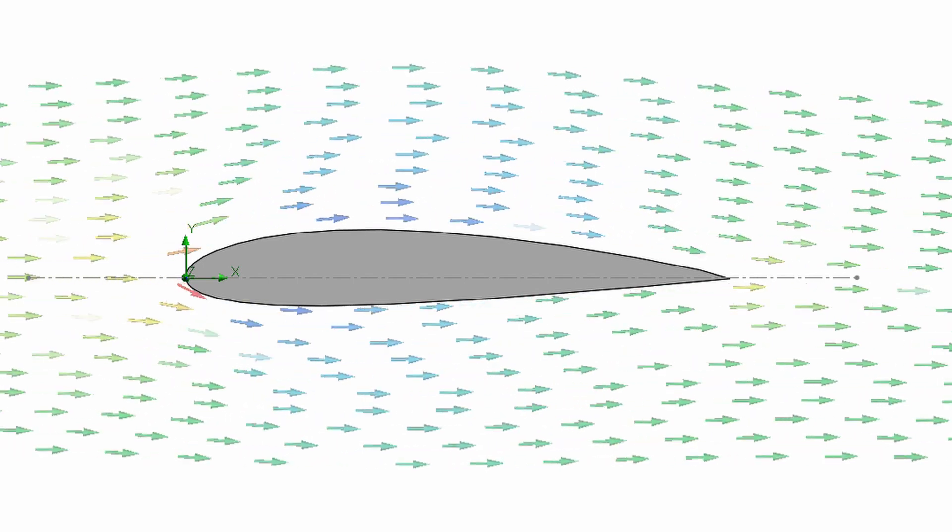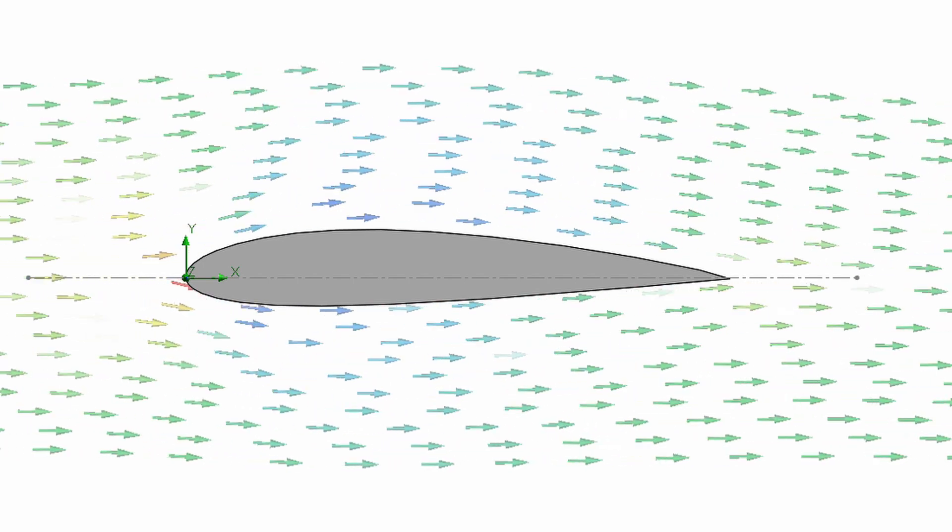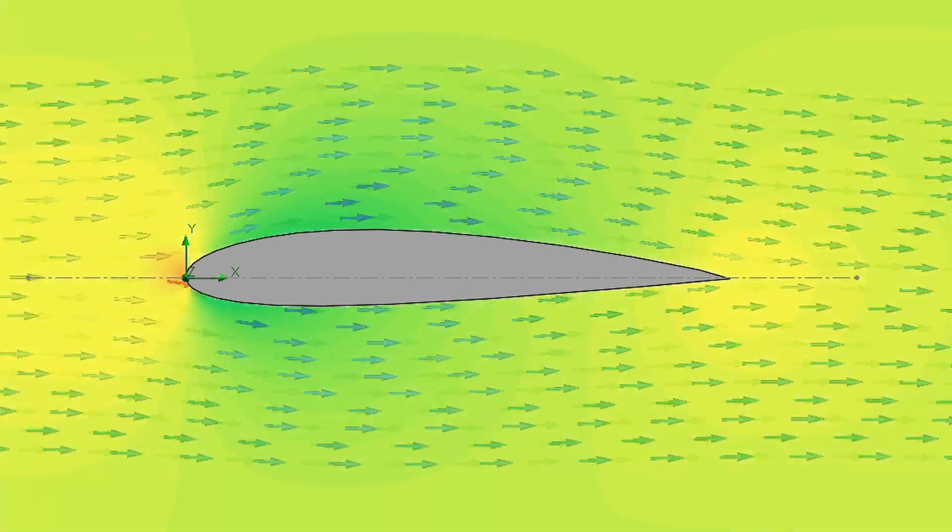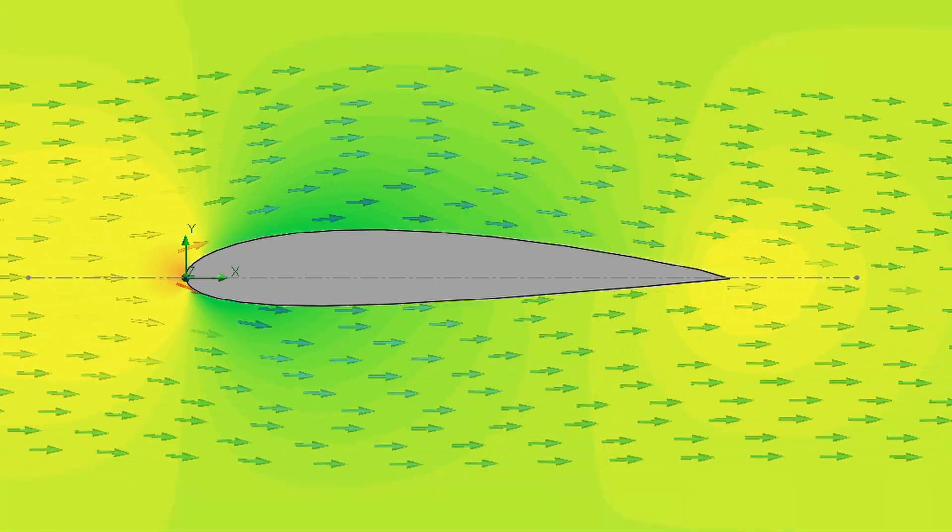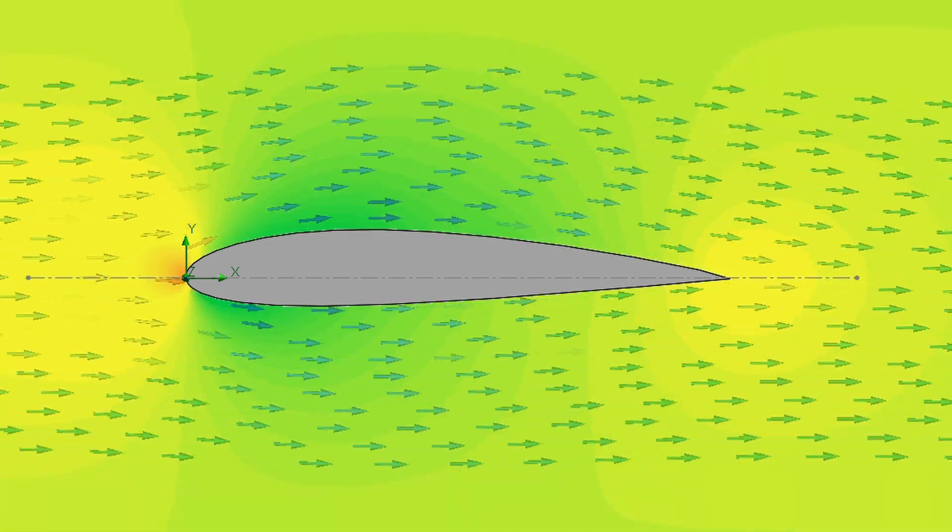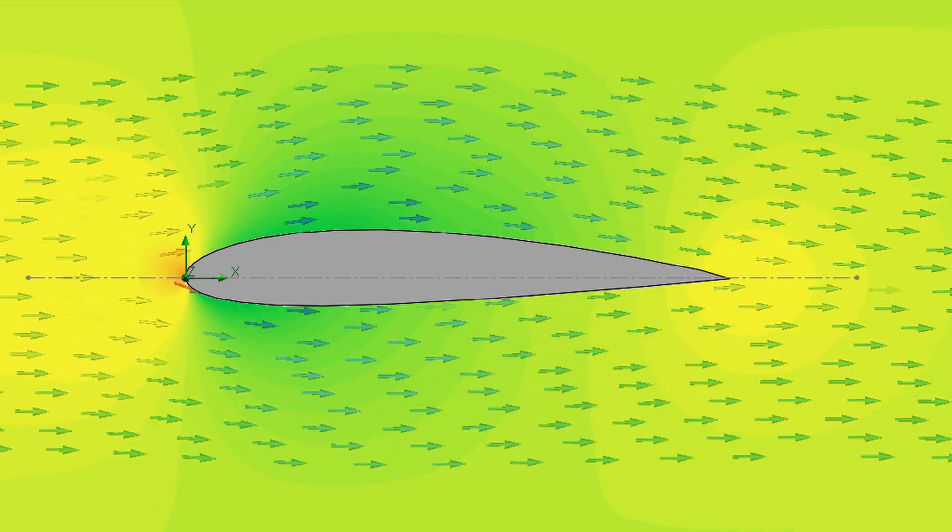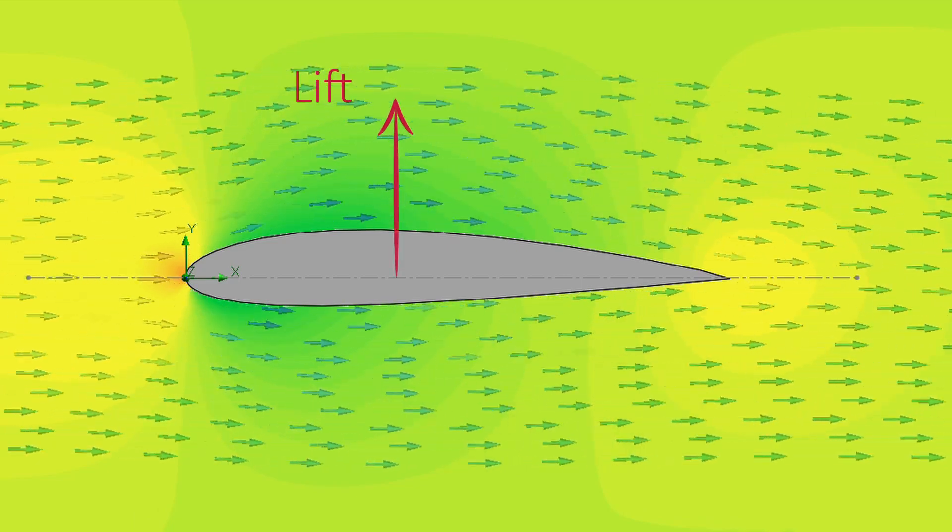If we represent the relative pressure, we obtain a distribution like this one. Note that the pressure above the airfoil is lower than the pressure below. For this reason there is a net vertical force, the lift.